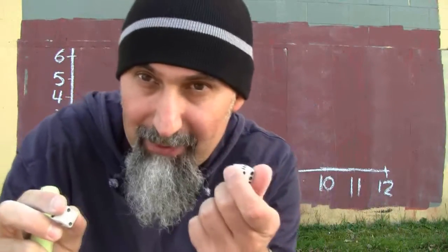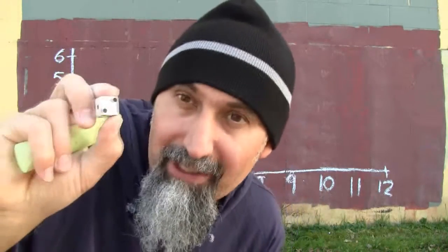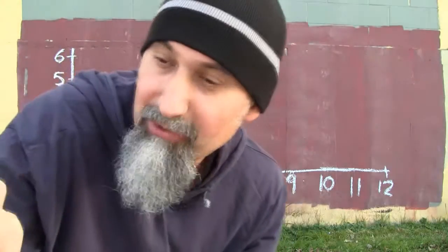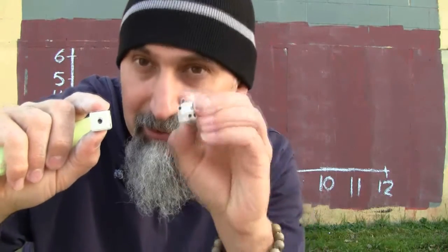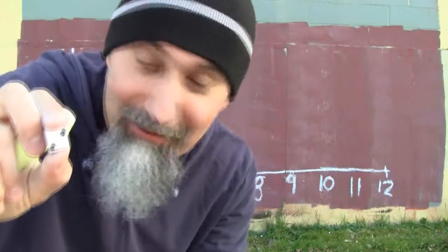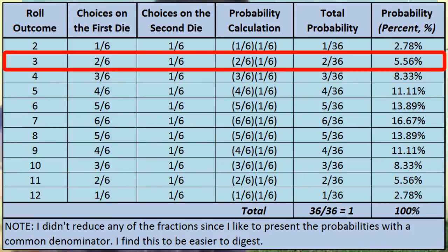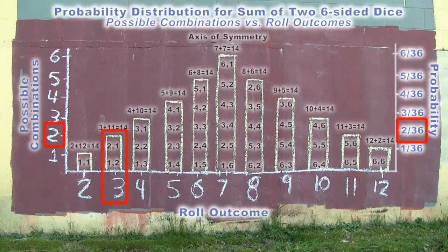To get the number three, you can get a one or a two on the first die. If you get a two on the first die, you need to get a one on the second die. The probability is two out of six times one out of six — because no matter what you get on the first die, you need a specific number on the second die. If you get a one on the first die, you need a two; if you get a two, you need a one. So it's two out of 36, and there are two possible combinations: one-and-two and two-and-one.